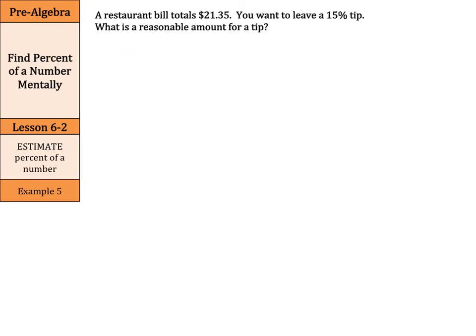Now, speaking of reasonable, a restaurant bill totals is $21.35. You want to leave a 15% tip. So what is a reasonable amount for a tip? Now, you should always tip at least 15% in a restaurant, 20% if it's excellent service, and 15% if it's service. But remember, your waiters and waitresses only make their money on tips for the most part.